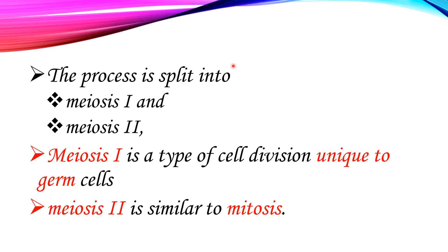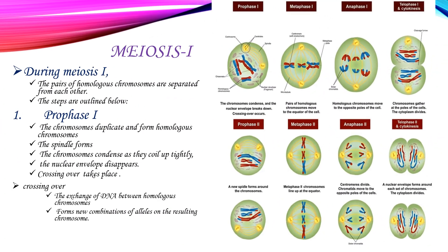Meiosis one is a type of cell division unique to germinal cells. Meiosis two, on the other hand, is similar to mitosis. So let's talk about meiosis one first.